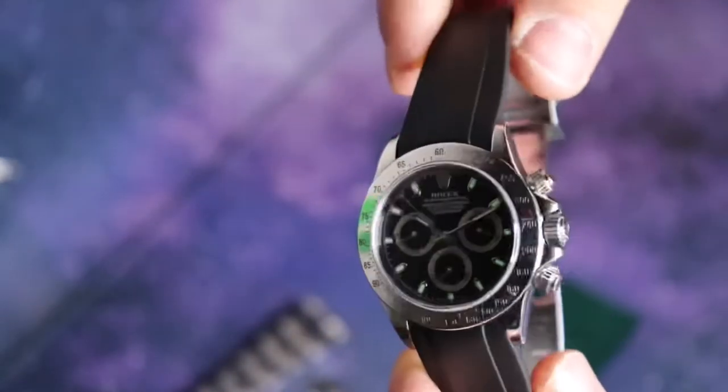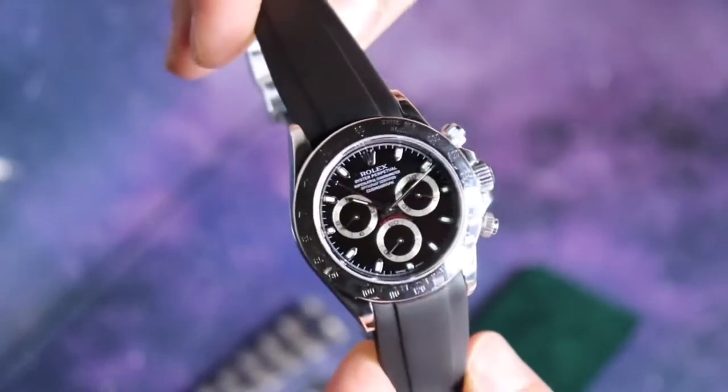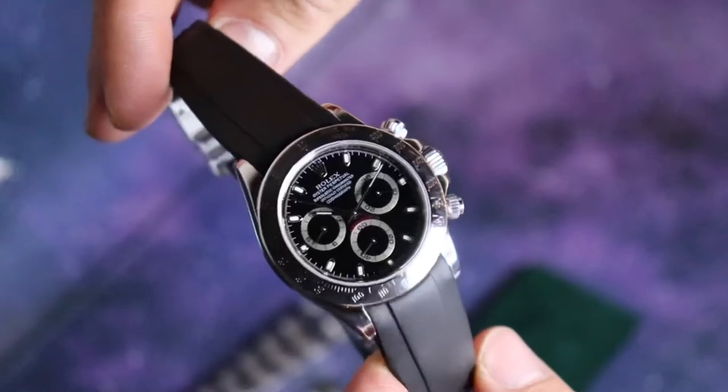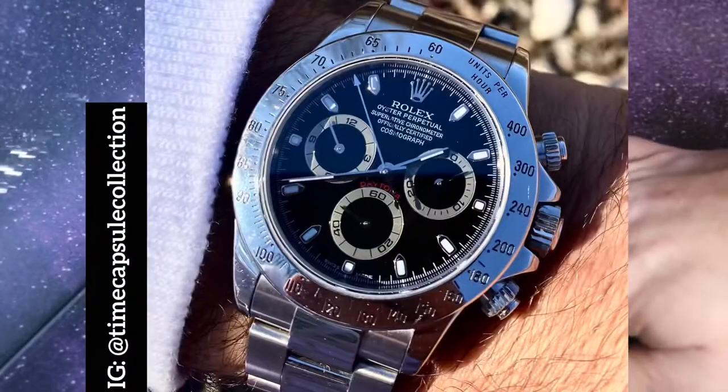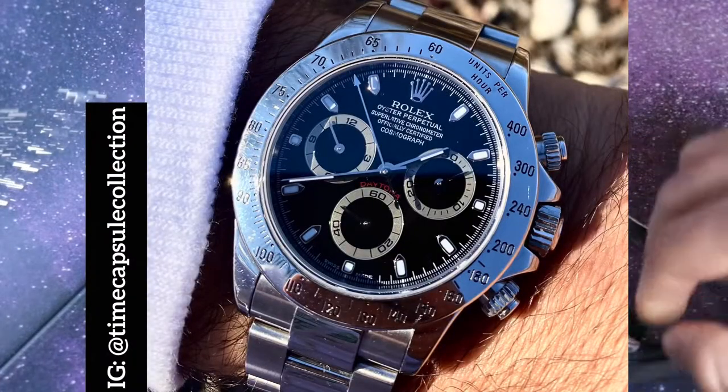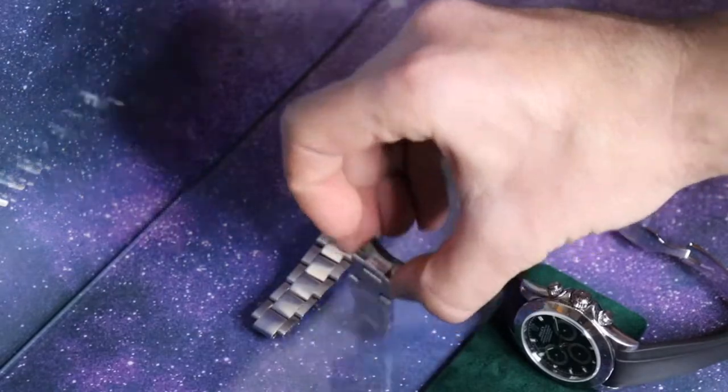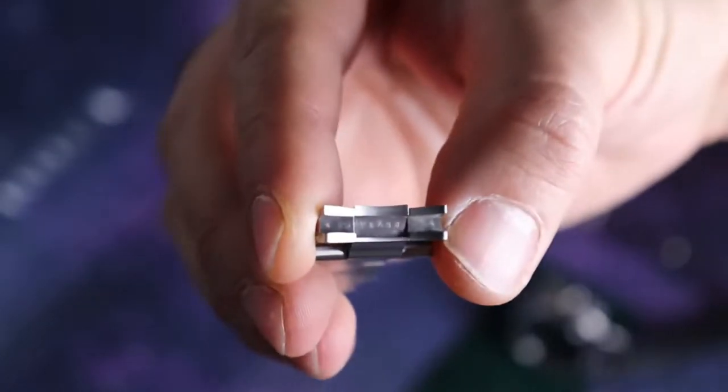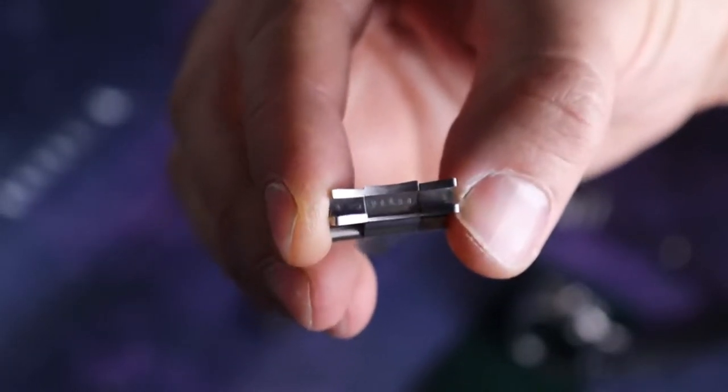Today I'm going to show you how to swap your rubber band from your Rolex Daytona reference number 116520 into its original oyster elements. I'm going to show you what the markings and engravings on the inner side of the solid end links look like in case you're looking to purchase a Rolex Daytona.